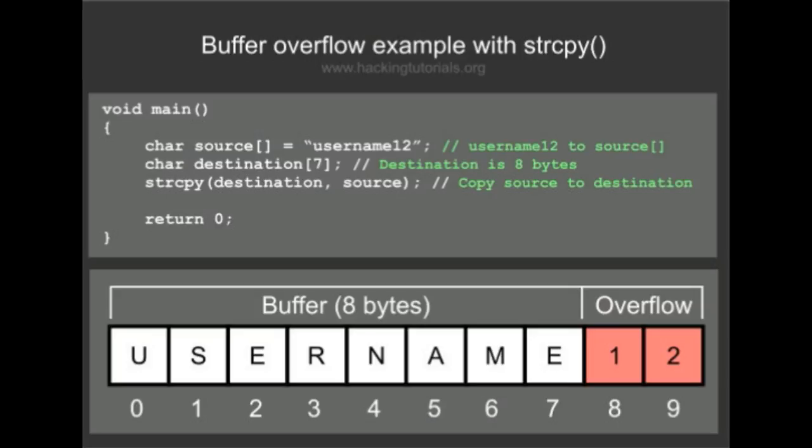But if the program is not written correctly, it will not show any error. In fact, it will take the extra input and process it. It will put the extra input adjacent to the actual buffer and take it into memory. In other words, the buffer size will get overflowed and the extra input will also be processed. This is the vulnerability — this is called buffer overflow.